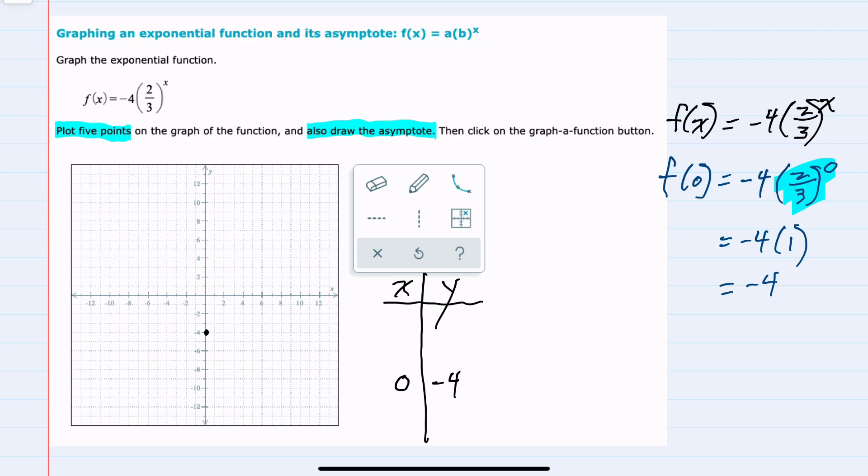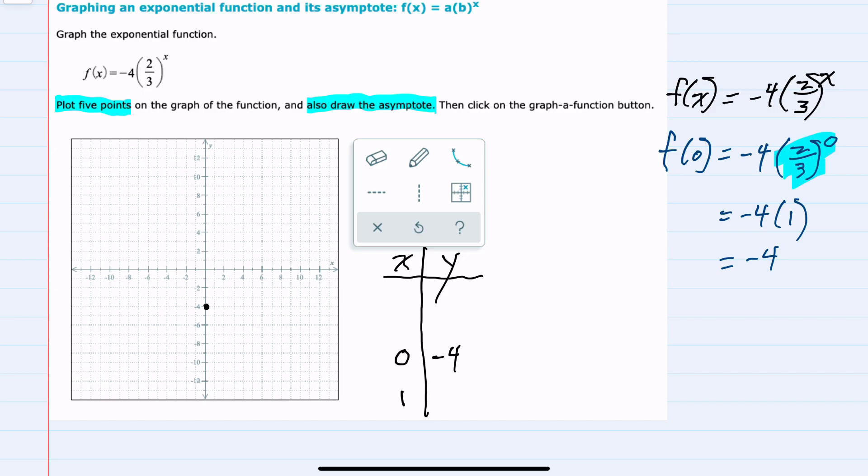Plotting that on our graph, I can then move on to other values. So substituting in x equals one would give us negative four times two-thirds to the first power. Again, starting with the exponent, two-thirds to the first power is just two-thirds, which would simplify to negative eight-thirds. So we have the point one and negative eight-thirds, which is just a bit less than negative three.